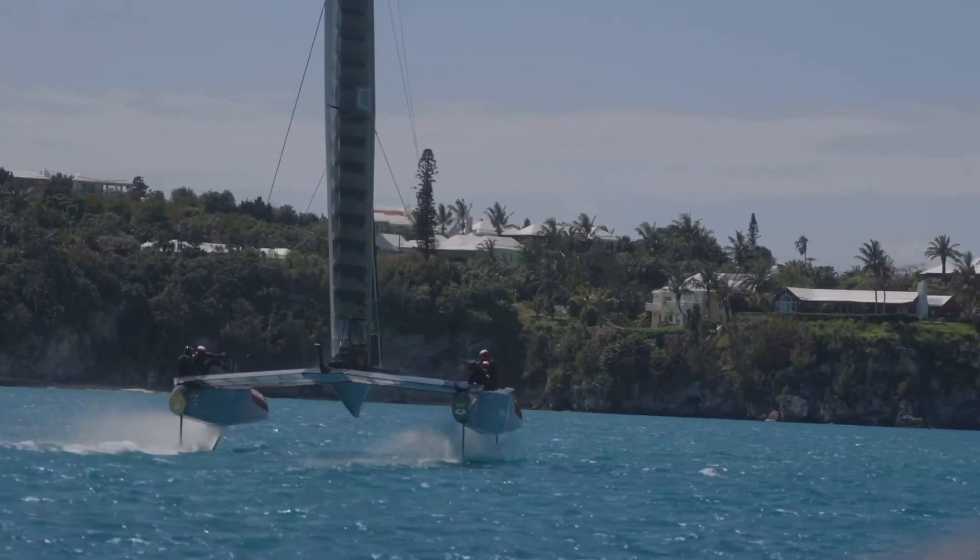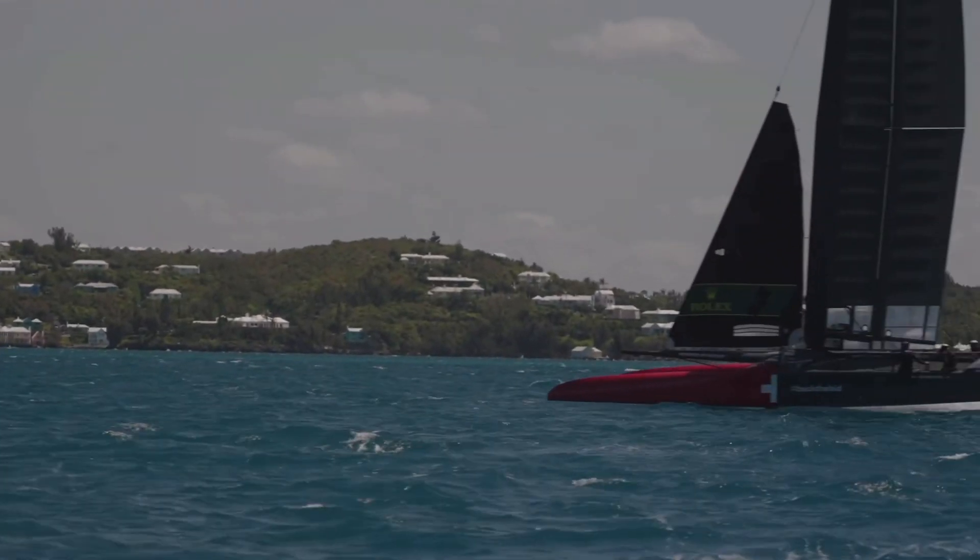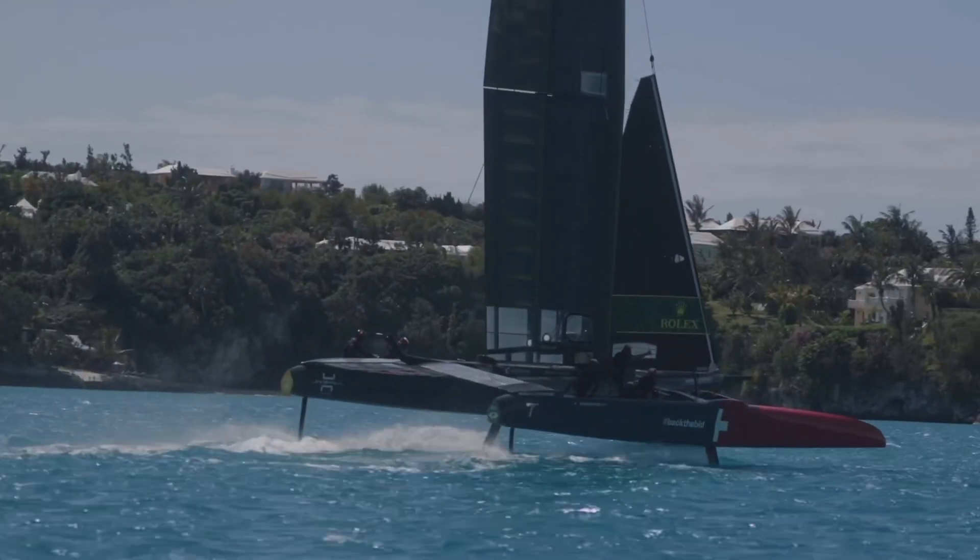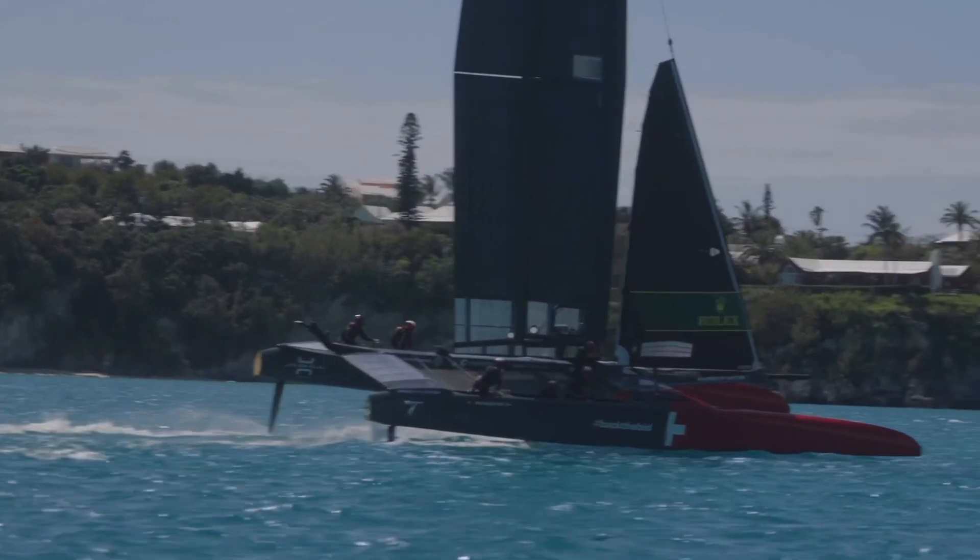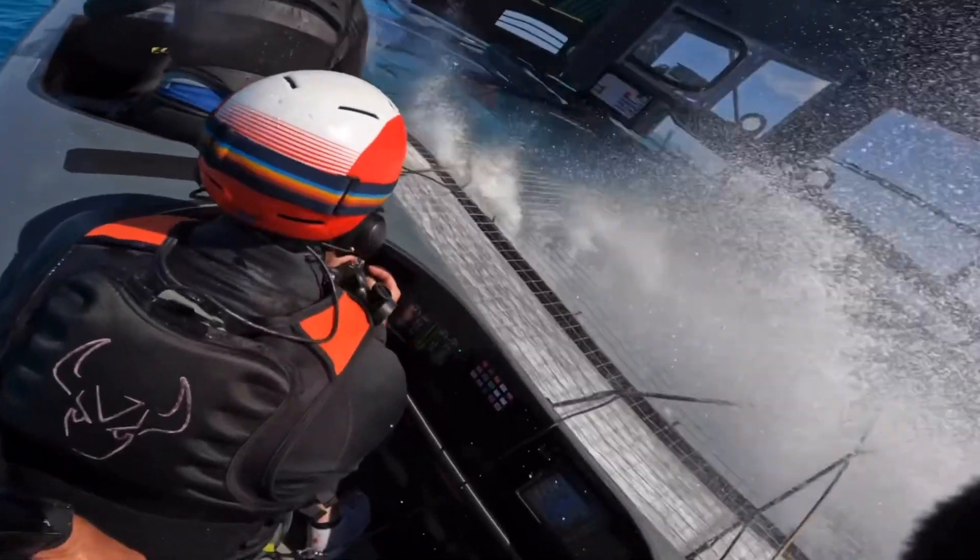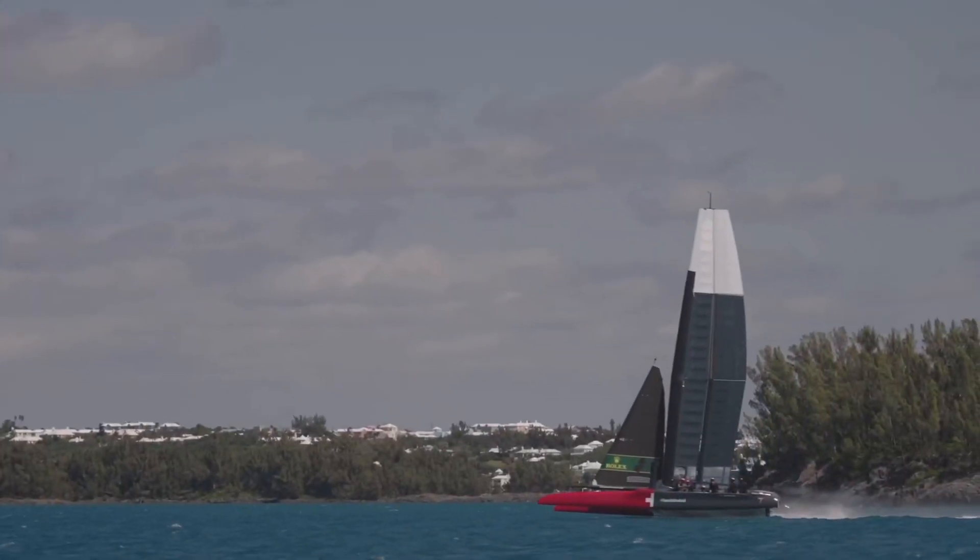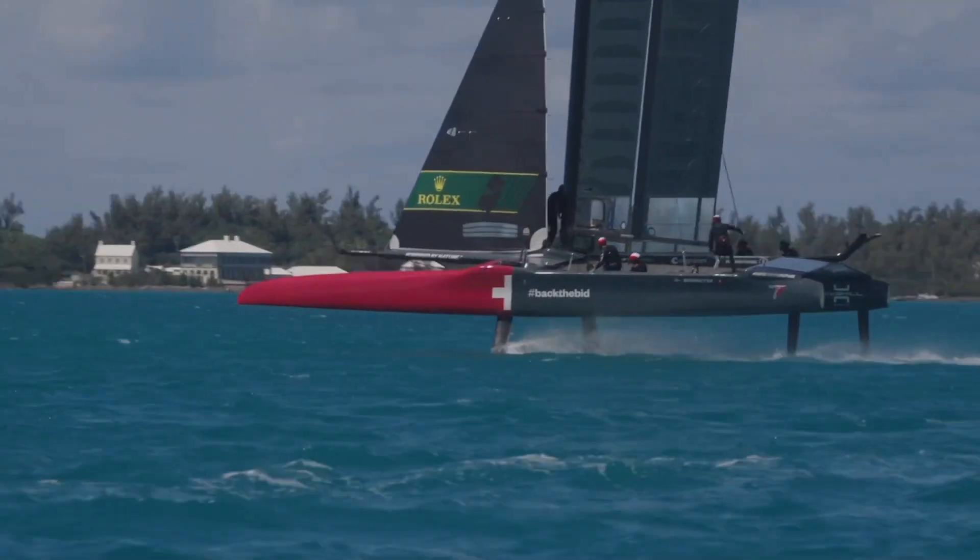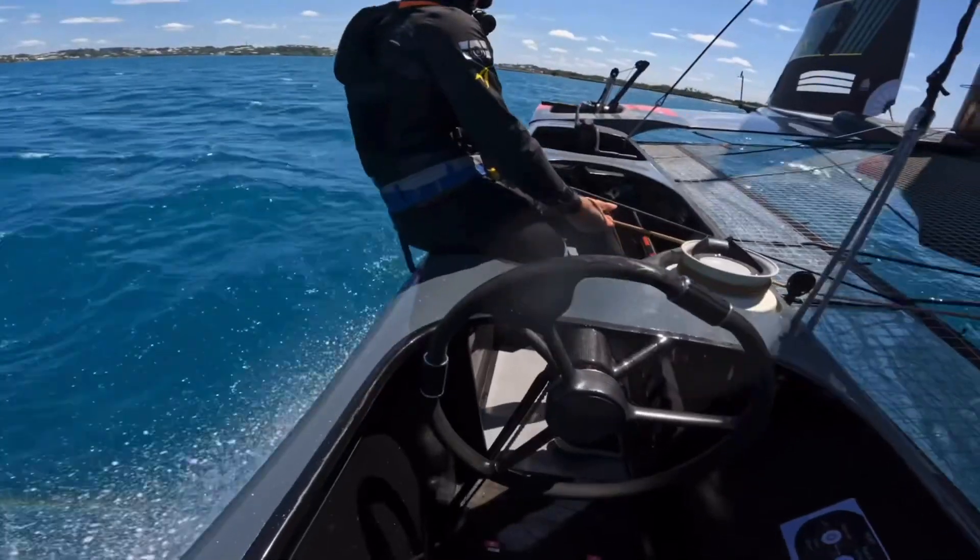The foiling SailGP and America's Cup boats are much faster than this, and can sail at several times the true wind speed, for example 45 knots of boat speed in 15 knots of wind. So they are literally always sailing upwind, regardless of the true wind, beating or close reaching at much higher apparent wind angles than any spinnaker would fly in. They are simply too fast to use spinnakers.